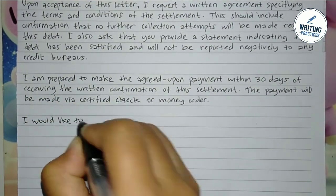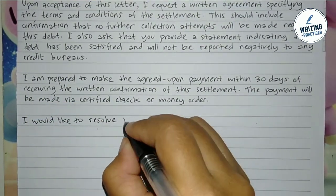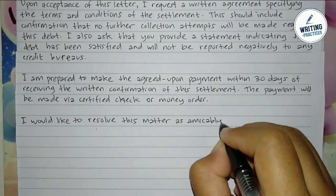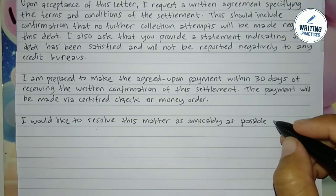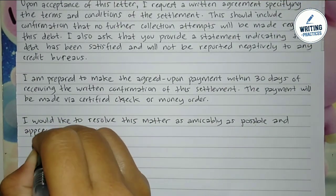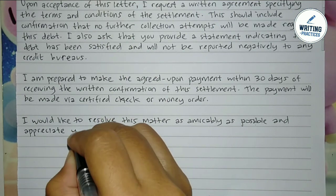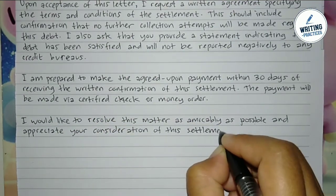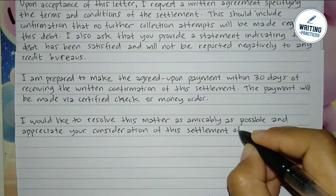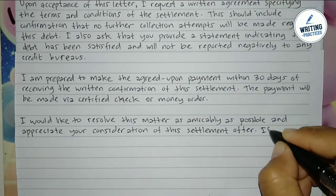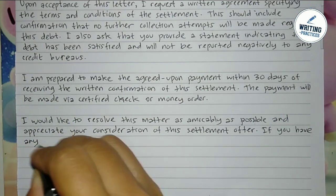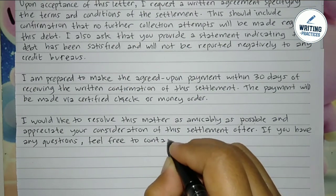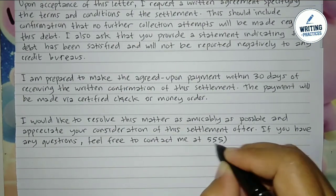In the seventh paragraph, you can provide your contact information — the most common being phone number and email address. Here you need to invite the recipient to contact you as the debtor in case they have any questions. You can write: 'I would like to resolve this matter as amicably as possible and appreciate your consideration of this settlement offer. If you have any questions or require further information, please feel free to contact me at 555-123-4567 or jeremy@email.com.'